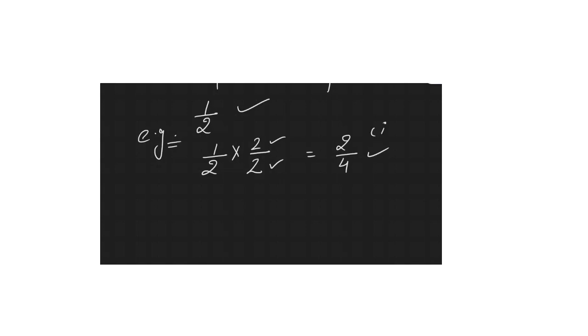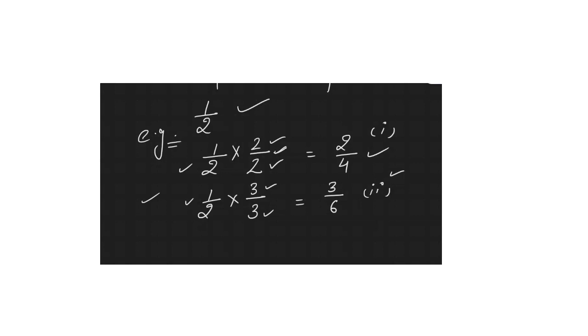Here, if I multiply by 2: numerator 1×2 = 2 and denominator 2×2 = 4, so 2/4 is the first equivalent fraction of 1/2. For another equivalent fraction, I multiply by 3: 1×3 = 3 and 2×3 = 6, giving 3/6. So equivalent fractions of 1/2 are 2/4 and 3/6.